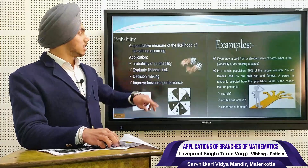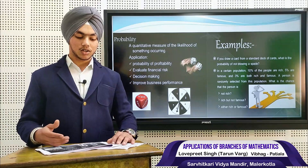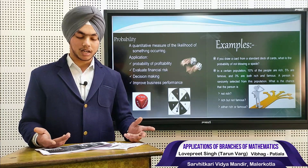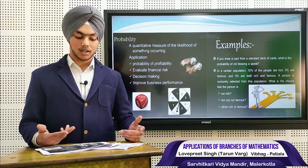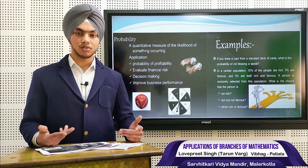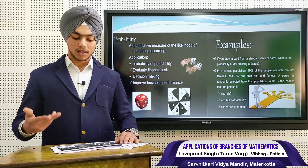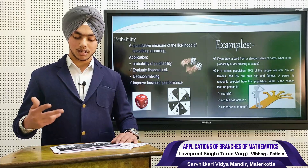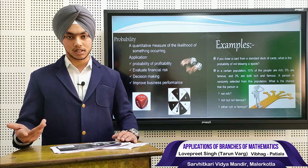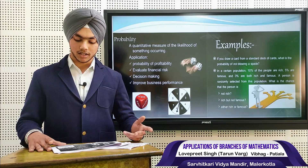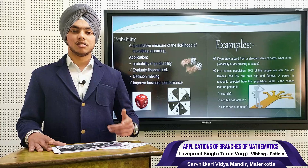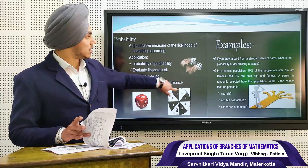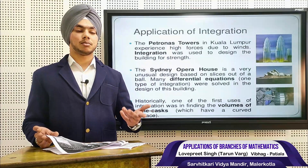Next, we move to another application: probability — a quantitative measure of the likelihood of something occurring. Applications include assessing probability of profitability, evaluating financial risk, decision making, and improving business performance. For example, in a certain population, 10% of people are rich, 5% are famous, and 3% are both rich and famous. A person is randomly selected — we can calculate the chance of getting a person who is not rich, who is rich but not famous, or who is either rich or famous, using probability.